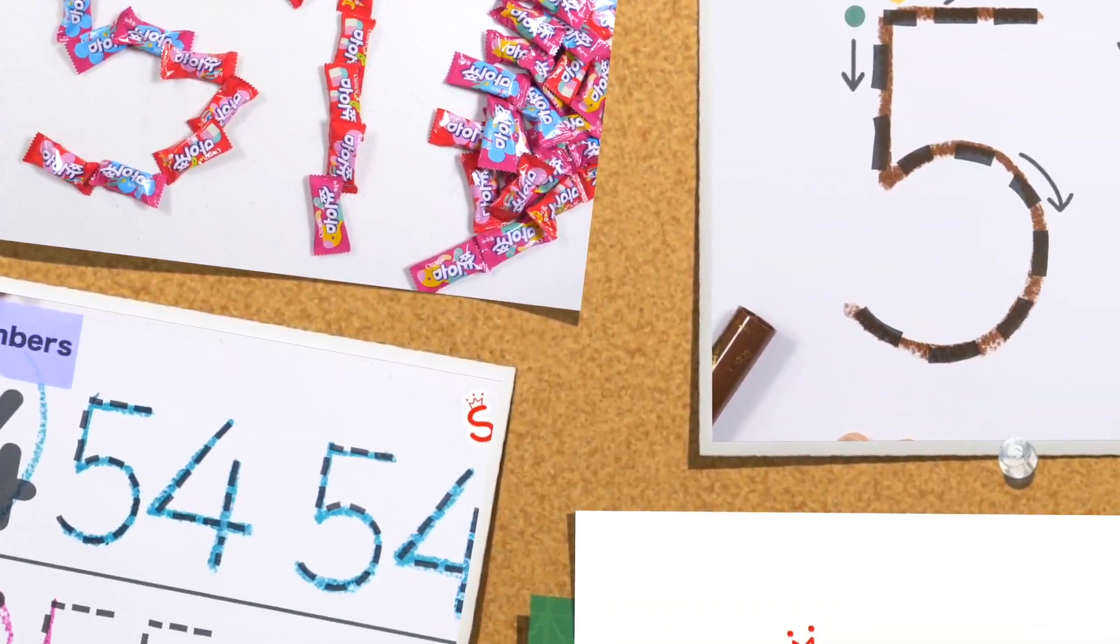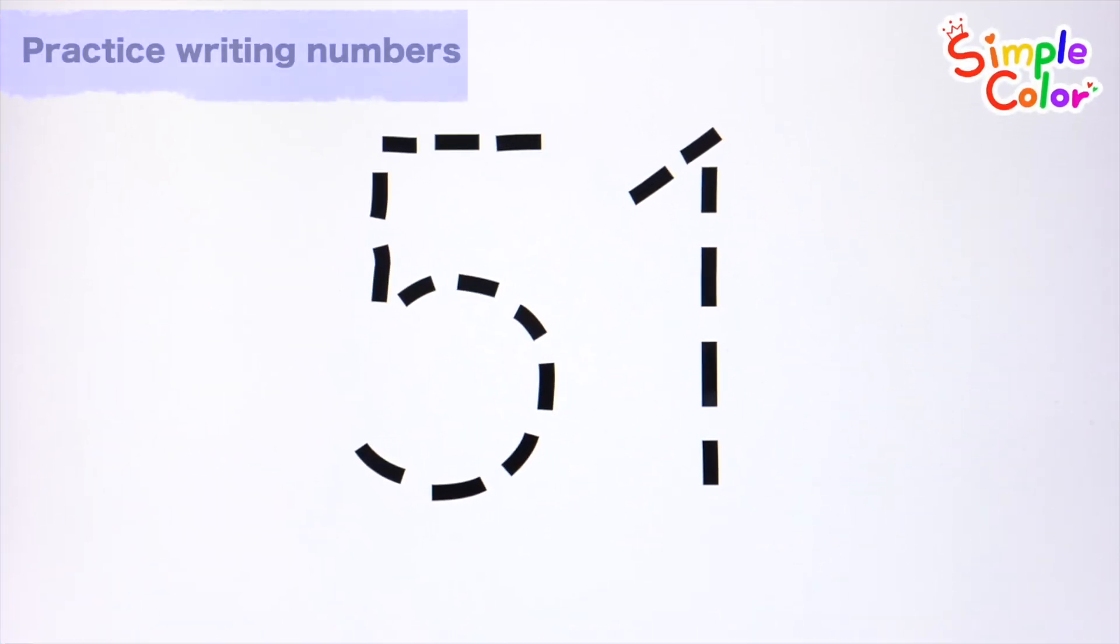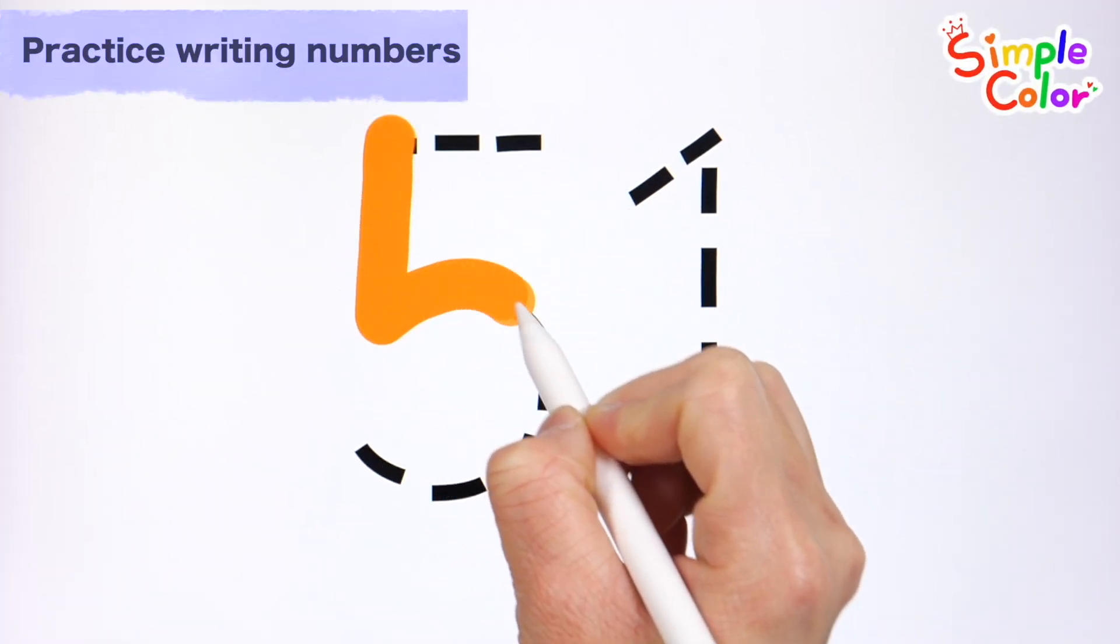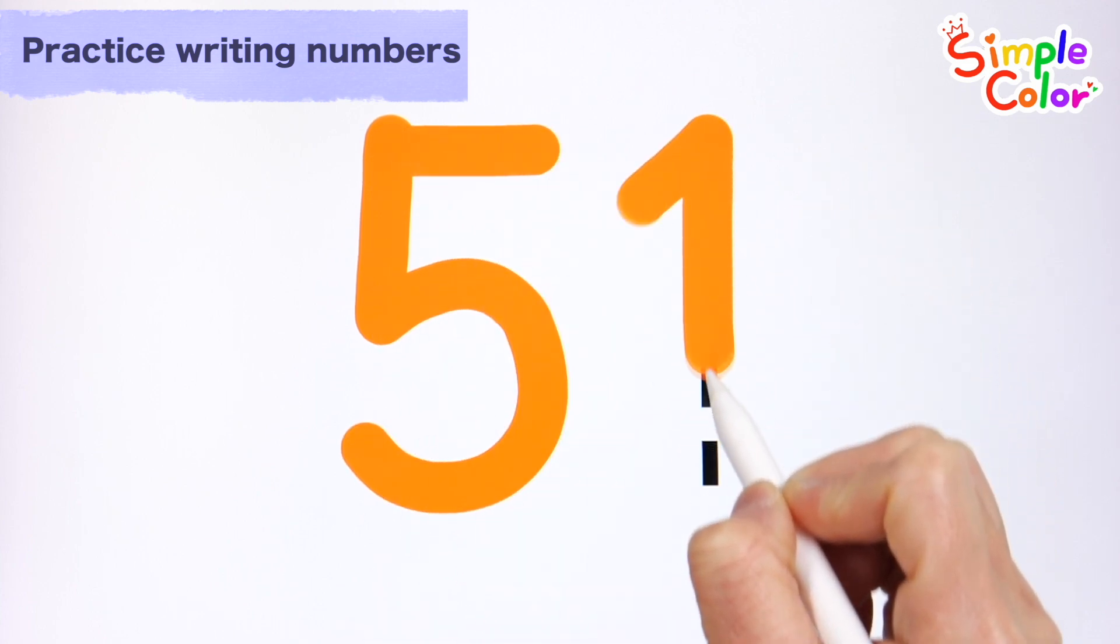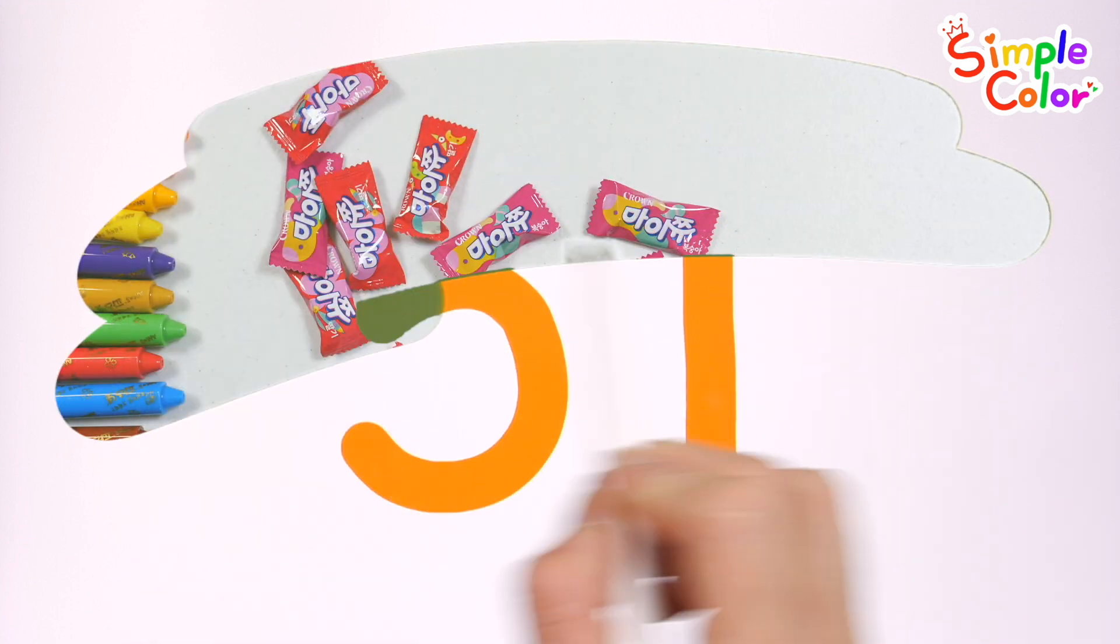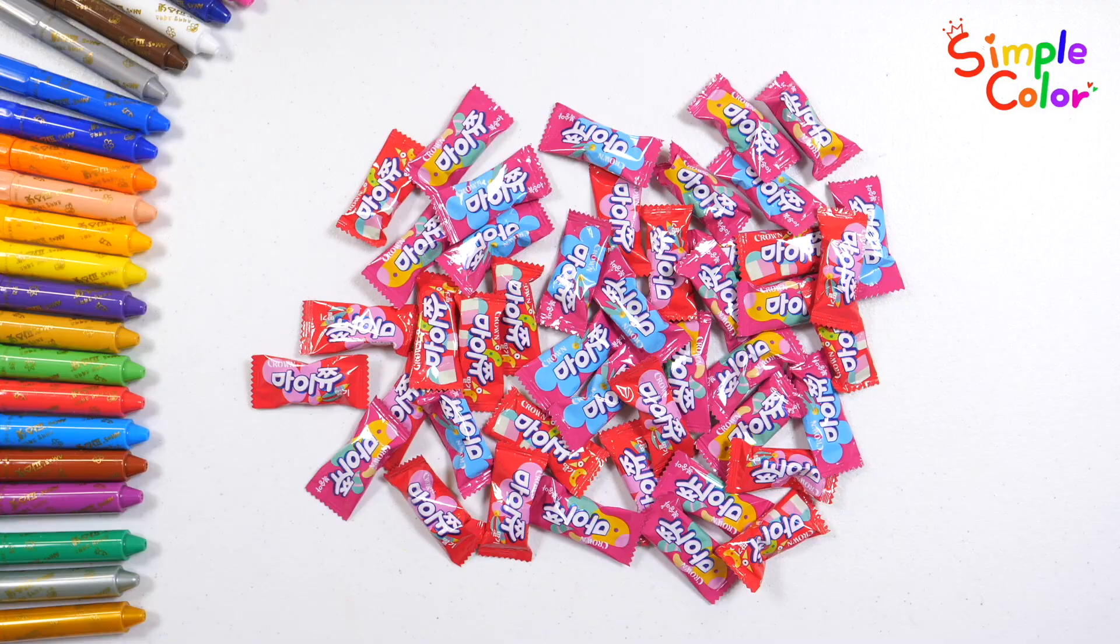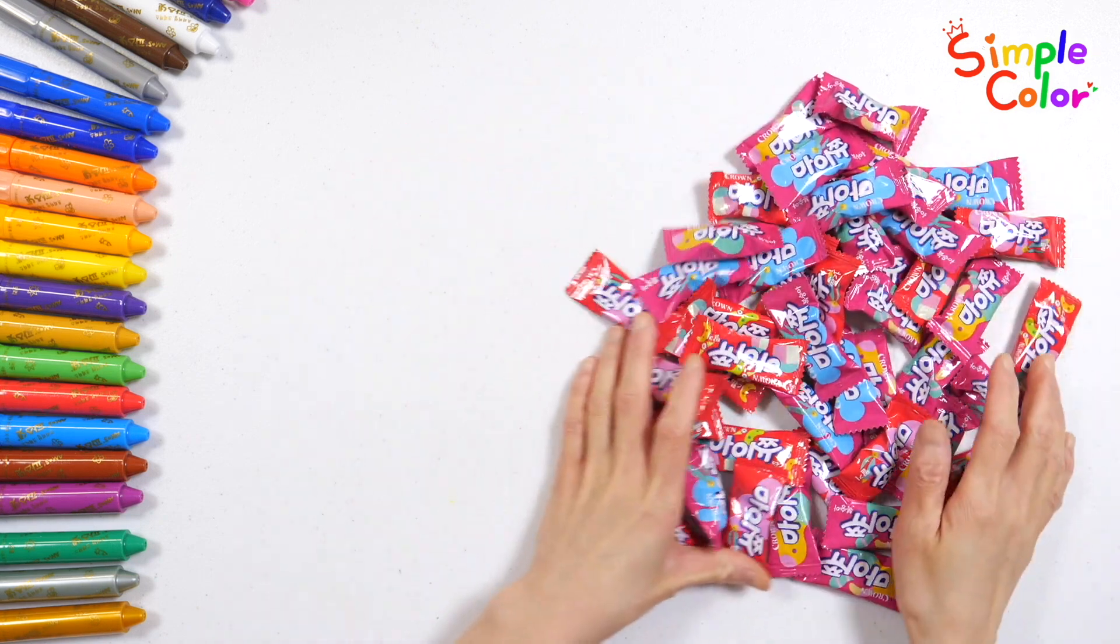51. Shall we write the numbers along the dotted lines? What do you see behind the numbers? This time, let's make numbers with sweet candy.